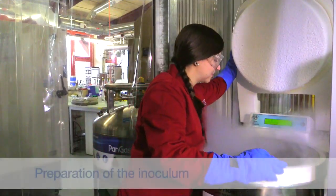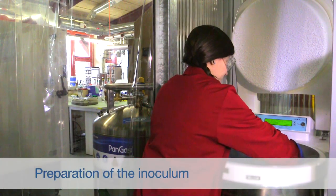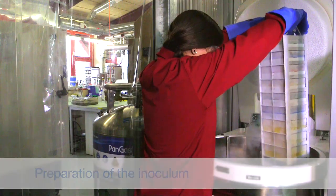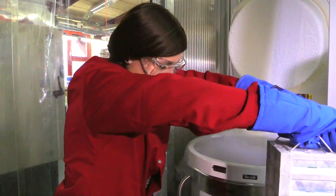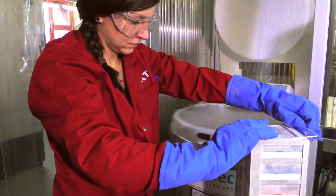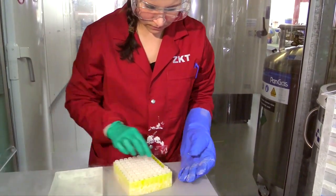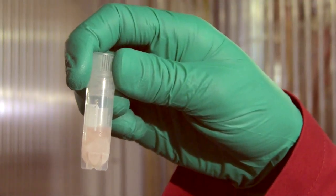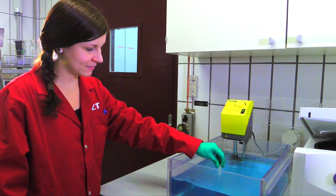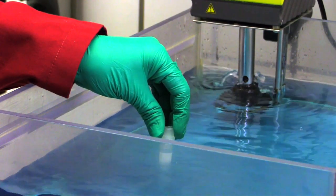For inoculation of every spinner flask, cells from the vial-based working cell bank are used. First, the vials are taken out of the liquid nitrogen storage tank. One vial provides the inoculum for 8 to 10 spinner flasks. The vials are thawed in the water bath at 37 degrees Celsius for approximately 2 minutes.